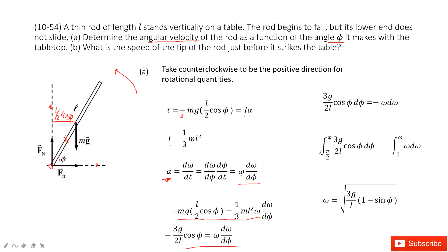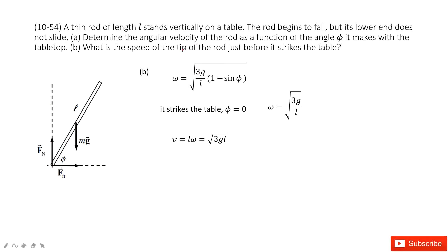We can see for phi, initially it is pi over 2. Finally it is phi. And initially omega is 0. Finally it is omega. And solve this equation, we get the function. This is exactly the angular velocity as a function of angle phi.